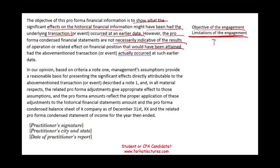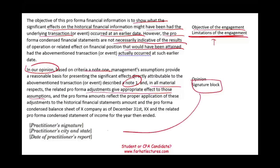We are not limiting the report — we are saying the engagement itself has its own limitation. We have to let you know: don't believe this is 100% the truth. It is the truth based on our assumptions, but you don't know exactly what could have happened — this is what we think. Then the last paragraph is our opinion: based on Note 1, management assumptions provide a reasonable basis, and the related pro forma adjustments give appropriate effect to those assumptions. So everything is good — based on the assumptions and criteria in Note 1, this is essentially a clean opinion. Then we use the signature block.